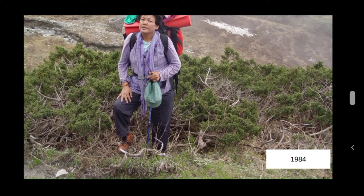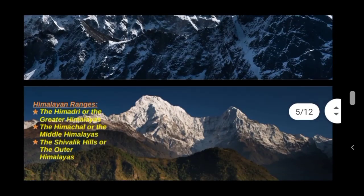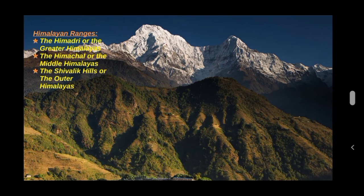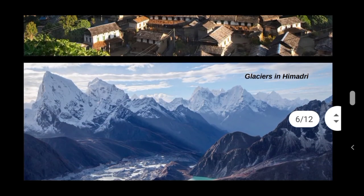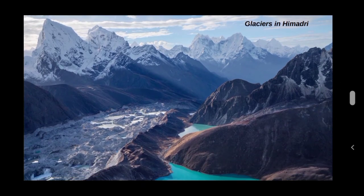The Himalayas have three ranges running parallel to each other: Himadri or the Greater Himalayas, Himachal or the Middle Himalayas, and the Shivalik Hills or the Outer Himalayas. All the highest peaks are located in the northernmost range, the Himadri region. There is no plant life in this region because of the extremely cold climate. These peaks are permanently covered with snow, and sometimes blocks of ice move slowly down the mountains — these are called glaciers.